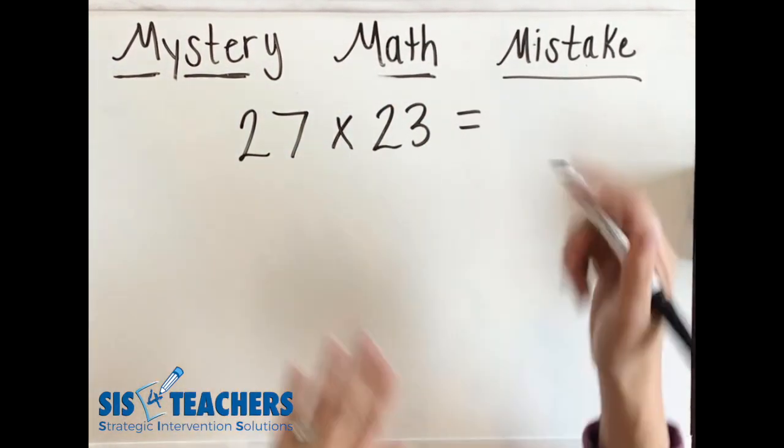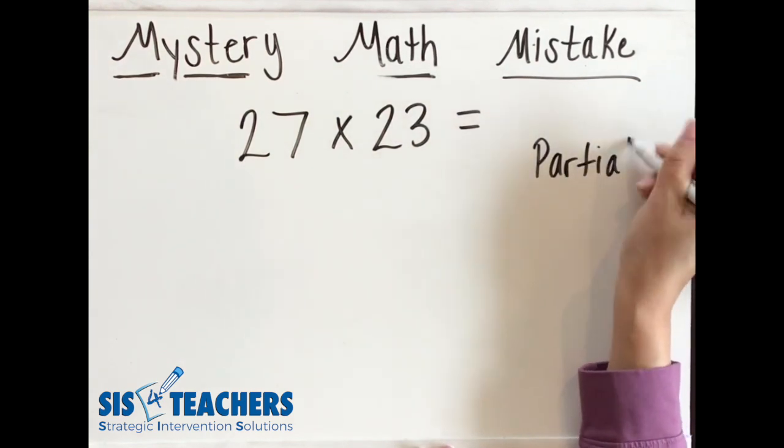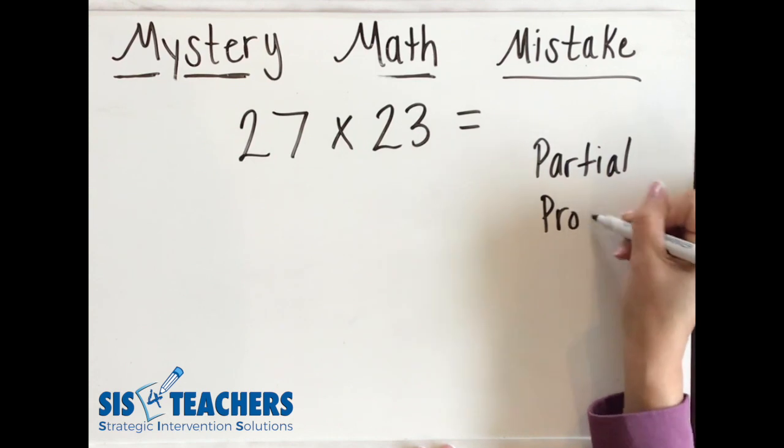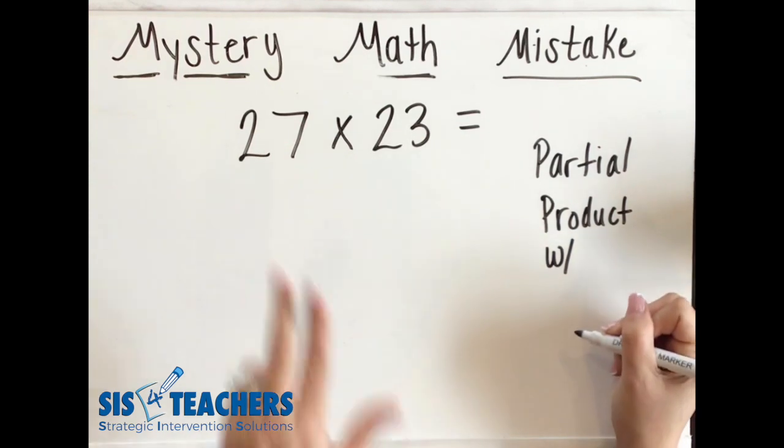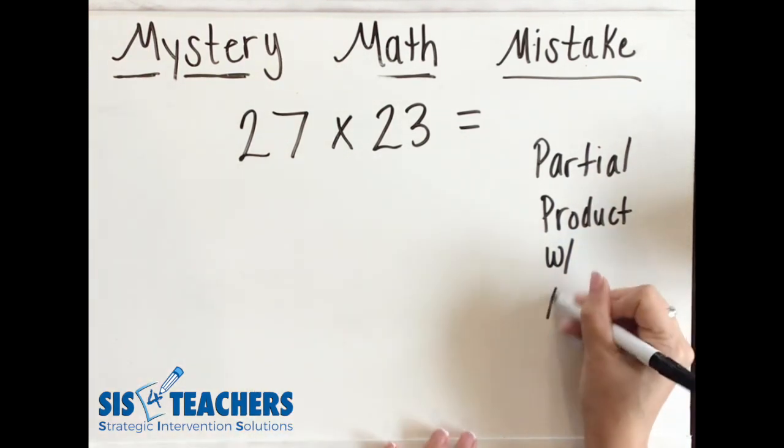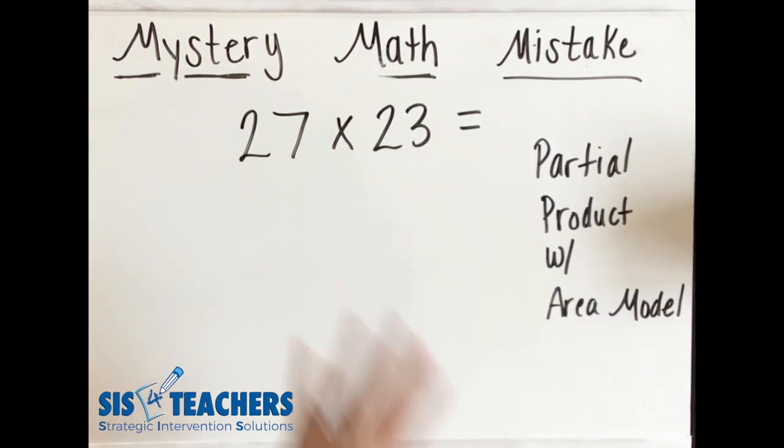I am going to use partial products with the area model. It's a really great way to solve multiplication when you do a two-digit by two-digit, especially if you're newer to solving it and maybe don't understand yet how to do it with the traditional method.